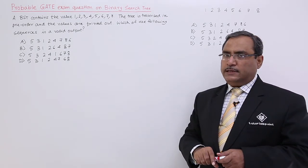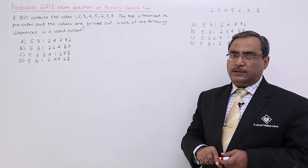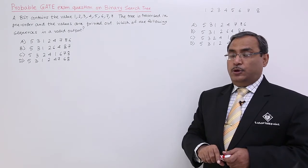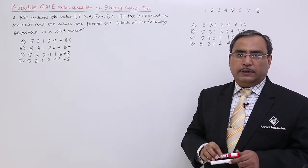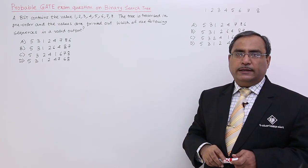We know that in case of binary search tree, if you go for the in-order traversal, that means we will be getting the sorted data. So that means the list of values whatever they are giving is nothing but the in-order traversal of the binary search tree.